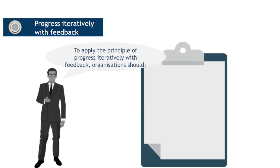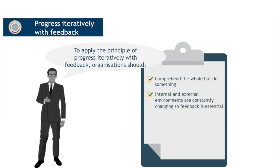To apply the principle of Progress Iteratively with Feedback, organisations should consider the following advice: Comprehend the whole but do something — sometimes the biggest challenge to progressing iteratively is the desire to understand and account for everything, resulting in what is sometimes called analysis paralysis, which must be avoided. Internal and external environments are constantly changing, so feedback is essential. Fast does not mean incomplete — each iteration should be complete within itself.